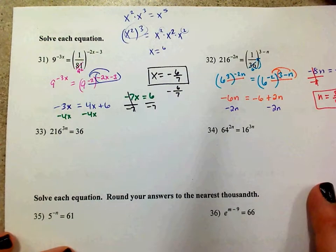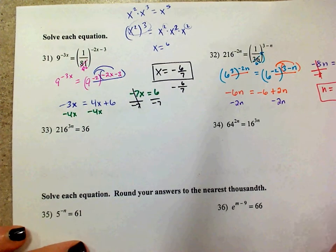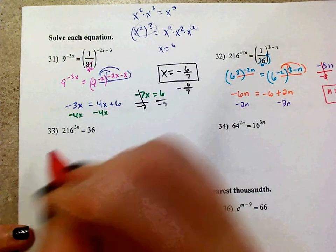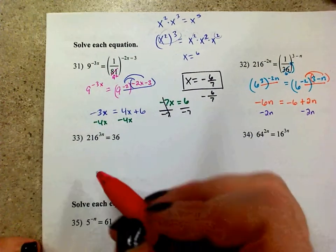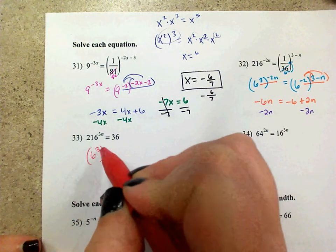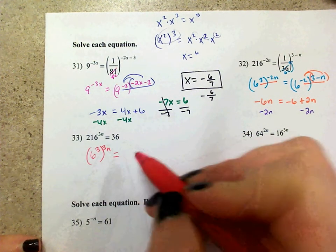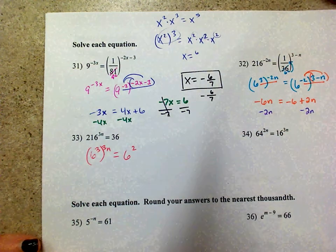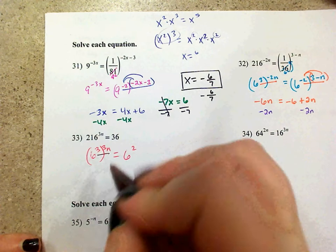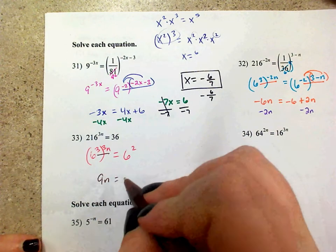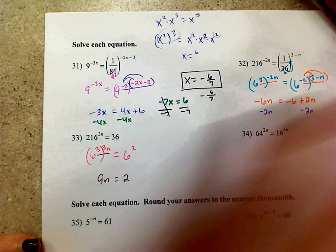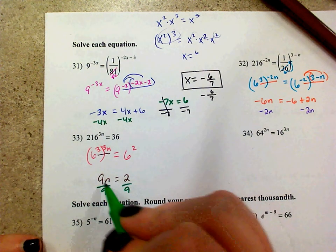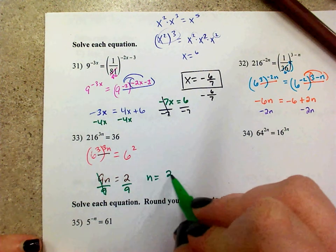On number 33, 216 and 36 show up again, so we'll use those same powers. 216 is 6 cubed, so 6 cubed to the 3n, and 36 is 6 squared, so the 6's don't matter anymore. I'm left with 3 times 3n, which is 9n equals 2. Divide by 9, and n equals 2/9.